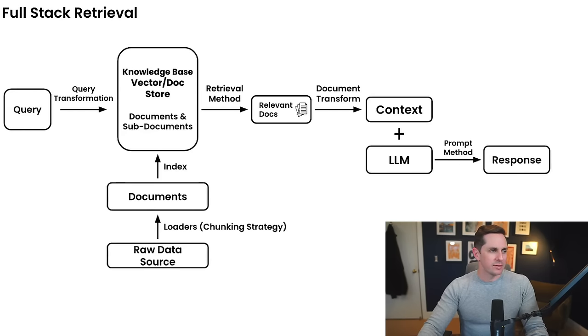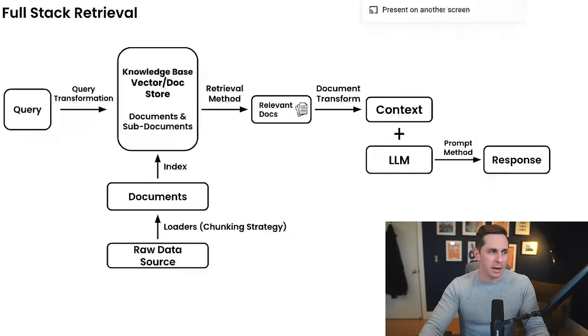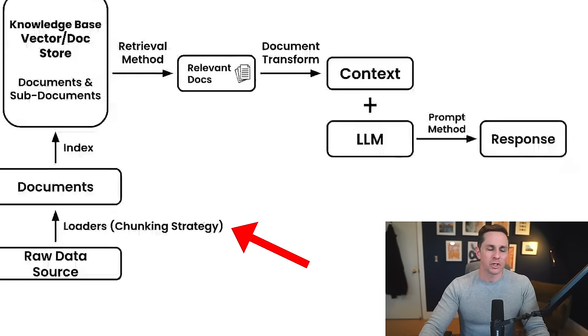In the bigger picture, the act of gathering the right information for your language models is called retrieval — the orchestration of tools and techniques to surface what your language model actually needs to complete its task. Looking at the full stack retrieval process, from raw data sources to response, the important part is that raw data sources need to make it into our knowledge base. But we can't just put in raw data sources — we need to chunk them. Right when you do your data loading, your chunking strategy comes into play. There isn't one right way to do chunking or retrieval strategy — what works for one may not work for another.